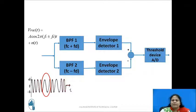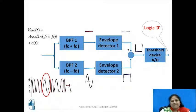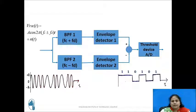Consider a bit slot when the incoming FSK signal has frequency fc − fd. This signal appears at the output of bandpass filter 2, whereas no signal is present at the output of bandpass filter 1. This results in a positive voltage at the output of envelope detector 2 and 0 volts at the output of envelope detector 1, giving a negative voltage at the output of the summing circuit. As this negative voltage is less than the reference voltage, the threshold device detects it as logic 0. In this way, during each bit slot, the FSK signal is demodulated as bit 1 or 0. As no additional reference synchronizing signal is used anywhere in the circuit, this is a non-coherent type of demodulation technique.